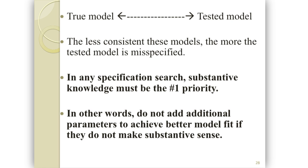Imagine a continuum from the true model that actually generated the covariance matrix to the model you're actually testing. There's always some distance between your model and the real model, and that distance is reflected in the fit. The less consistent those two models are, the more misspecified the model you're testing is.